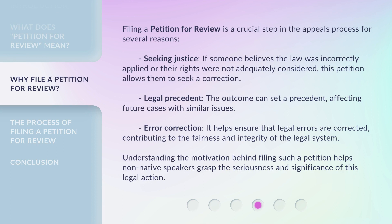Filing a petition for review is a crucial step in the appeals process for several reasons. First, seeking justice: if someone believes the law was incorrectly applied or their rights were not adequately considered, this petition allows them to seek a correction. Second, legal precedent: the outcome can set a precedent affecting future cases with similar issues. Third, error correction: it helps ensure that legal errors are corrected, contributing to the fairness and integrity of the legal system. Understanding these motivations helps non-native speakers grasp the seriousness of this legal action.